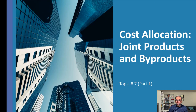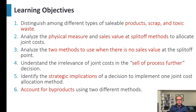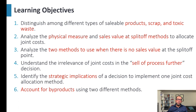Our topic for the seventh session is cost allocation, joint products, and byproducts. The learning objectives from this chapter include: distinguishing among different types of saleable products, scrap, and toxic waste. There are main products, scrap from defects, and byproducts which can be toxic or non-toxic, with or without saleable value.